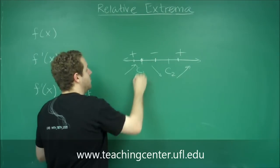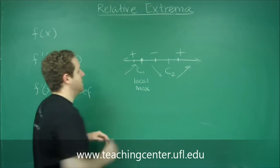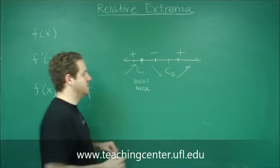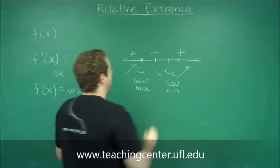So this point right here must be a local max, c1. And this point right here c2, since it goes from decreasing to increasing, this must be a local min. And those would be the relative extrema, the relative max and the relative min of this function.